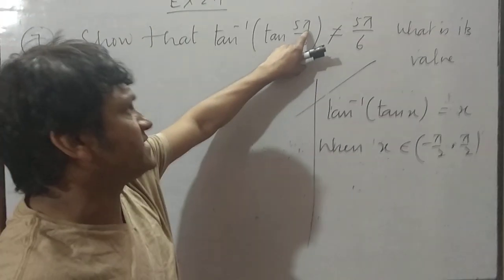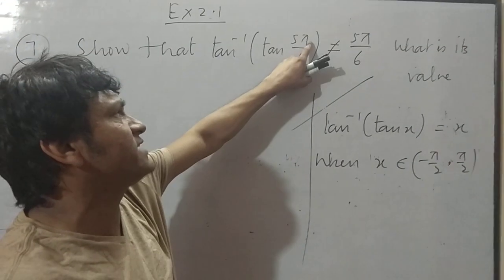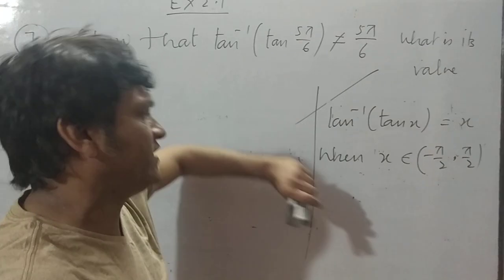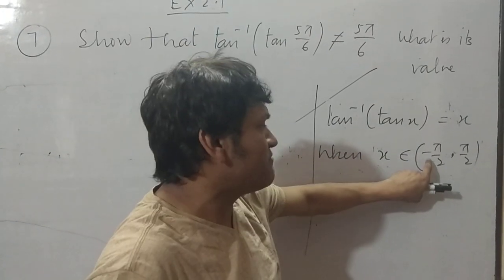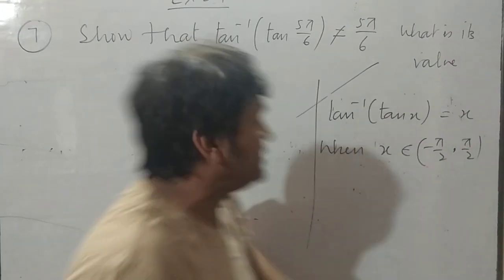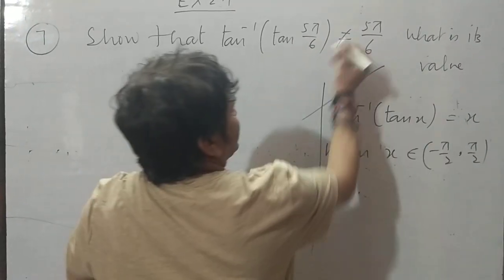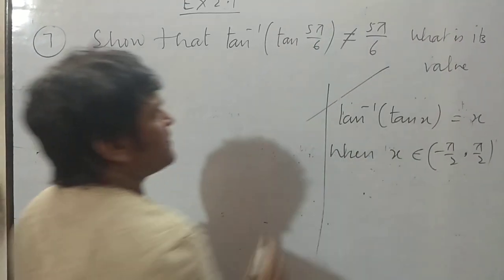Now listen, 5π/6, π is 180, 180 by 6 is 30, 5×30 is 150. Tan travels between minus 90 to 90. It can never be 150. That is why he is cutting here. It is not equal to 5π/6.